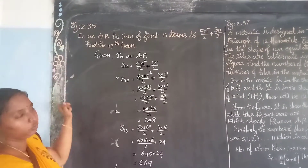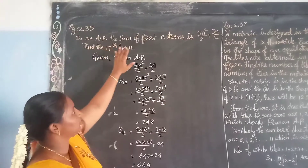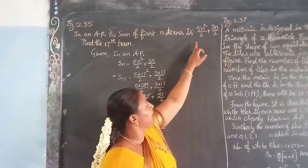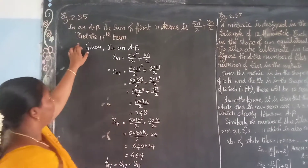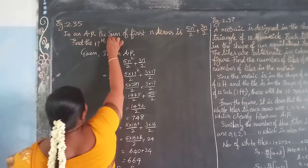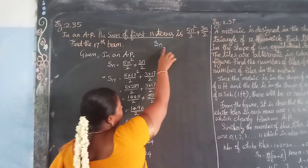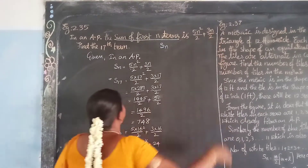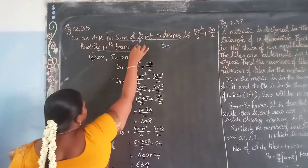Now we are going to see example 2.35. In an AP, the sum of first n terms is 5n²/2 plus 3n/2. Find the 17th term. So sum of first n terms means nothing but Sn. They have given Sn equal to 5n²/2 plus 3n/2. We are going to find the 17th term.